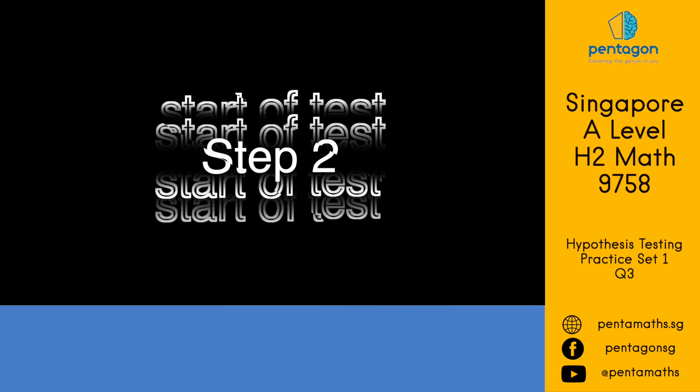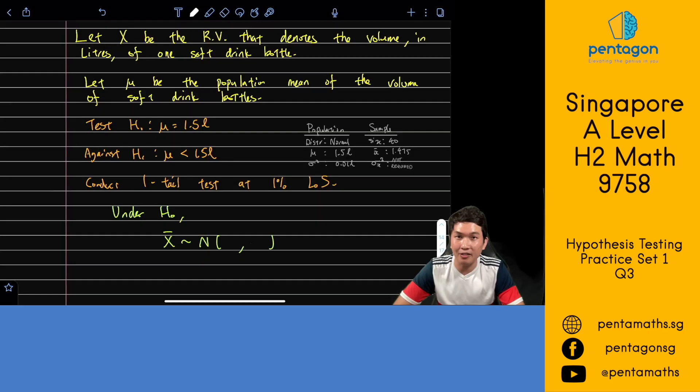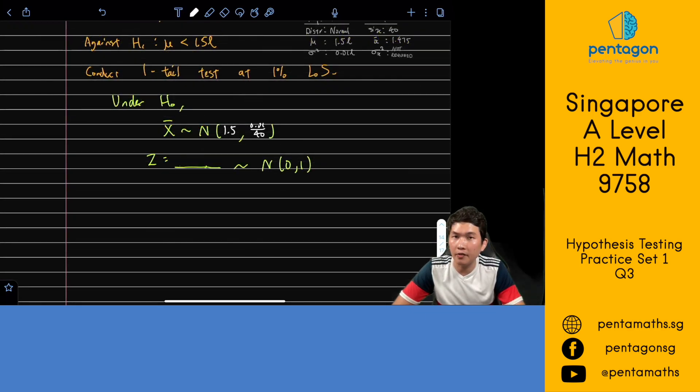In step 2, we have to begin the test by first assuming that the population mean is indeed 1.5 liters. If that is the case, then our sampling mean would also have a mean of 1.5 liters. The variance of our sampling distribution would be reduced to 0.01 divided by 40. In order to carry out the z test, let's convert our X bar variable into a z variable. To convert our X bar variable into the standard normal variable, we take X bar, which means all the possible sample means and subtract all of them by 1.5. We need to divide by the standard deviation of our sampling distribution, which would be the square root of 0.01 over 40.